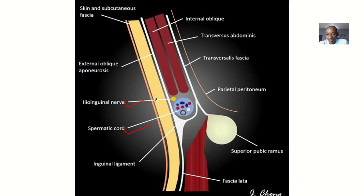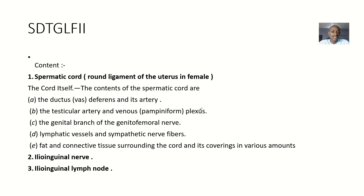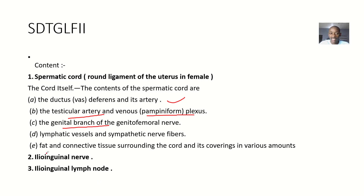Now the spermatic cord itself also has contents. The contents of the spermatic cord include: the ductus vas deferens and its artery, the testicular artery and the venous pampiniform plexus, the genital branch of the genitofemoral nerve, the lymphatic vessels and sympathetic nerve fibers, and also fat and connective tissues surrounding the cord and its covering in various amounts.